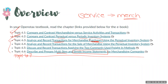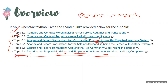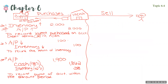Last video, we looked at how to record the journal entries relating to the purchase of inventory. Now we're going to move on to — now that we have that inventory and we look to sell it — what are the journal entries to record those sales? Here's a reminder of everything we did in the last video: journal entries to record purchases. Now let's move on to the sales side.